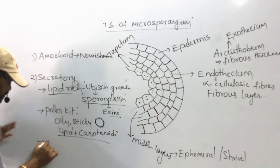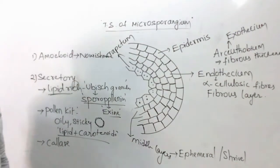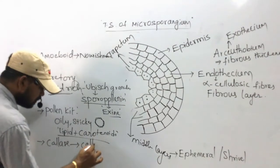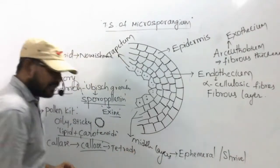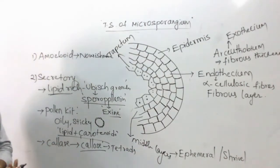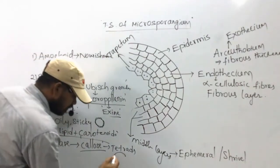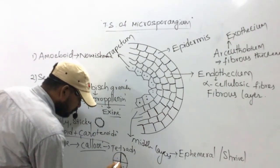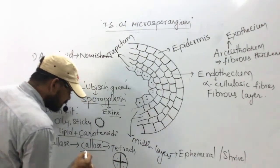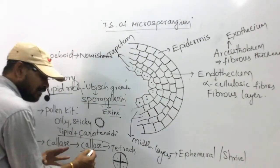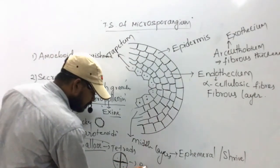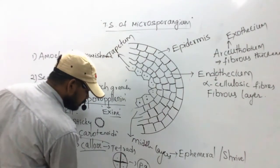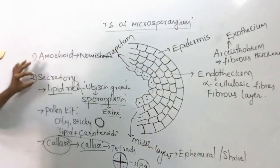The third substance secreted by secretary tapetum is the enzyme callase. Callase acts on callose, which is a cement-like material involved in the formation of tetrads — groups of four pollen grains. At maturity, the callose wall is dissolved and degraded by callase, so the tetrads become monads and four pollen grains are released from one tetrad.